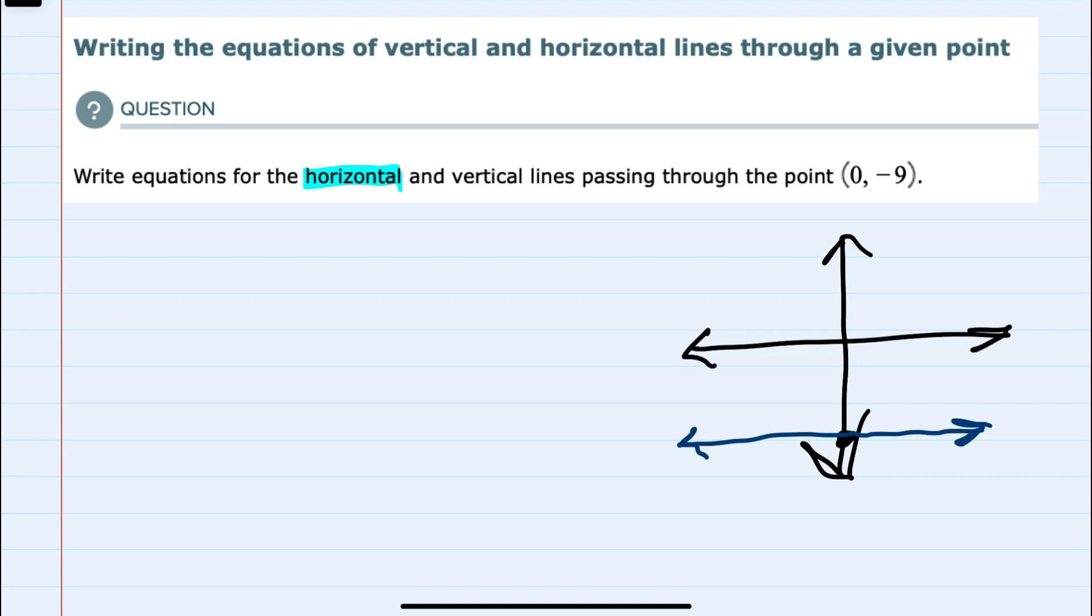So since they always have the same y value, their equation is y equals that y value, which here is -9. So y = -9 is the horizontal equation.